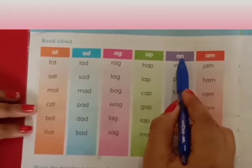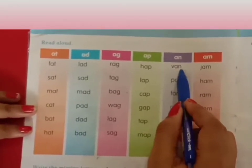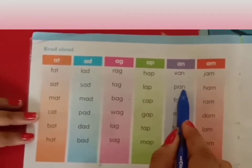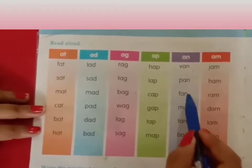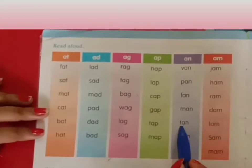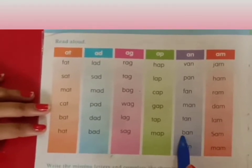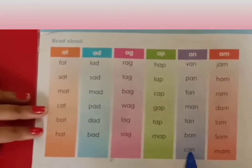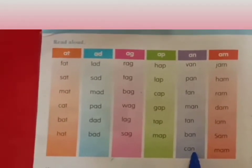Next is the 'an' line: an, van, pan, fan, man, tan, ban, can.